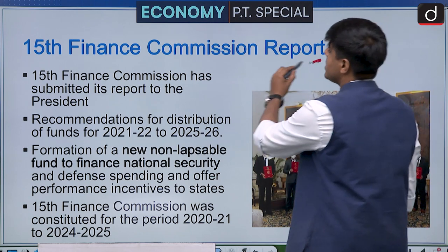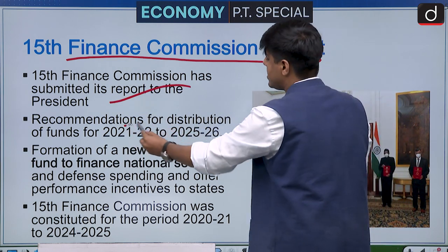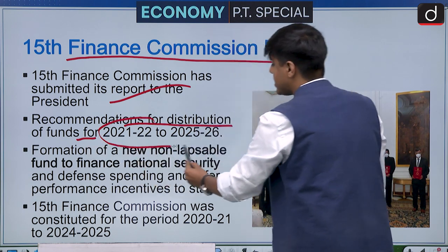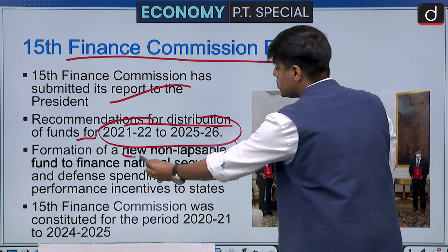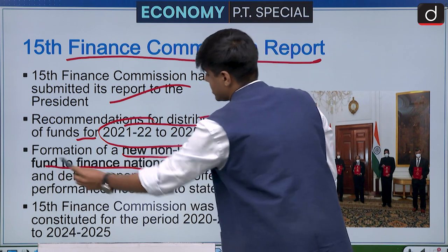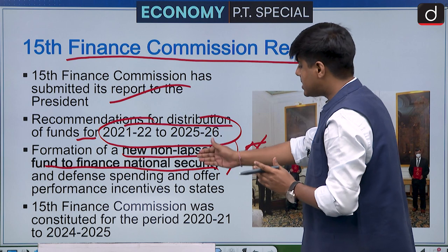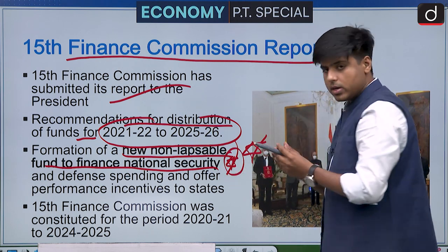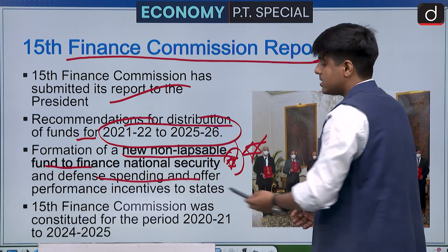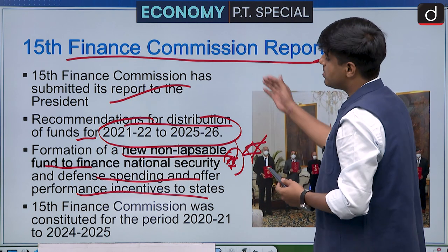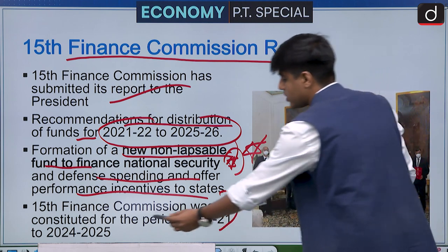The 15th Finance Commission report was submitted to the President, containing recommendations for fund distribution for the period 2021-22 to 2025-26. An important announcement was the creation of a new non-lapseable fund to finance national security, since defense projects have longer gestation periods and annual lapsing of funds is problematic. Several performance incentives to states were also included in these recommendations.